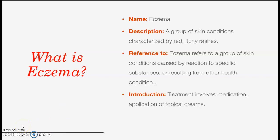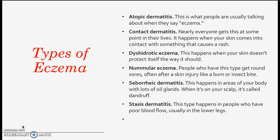What are the other types of eczema? Atopic dermatitis is what people are usually talking about when they say eczema. Contact dermatitis — nearly everyone gets this at some point in their lives. It happens when your skin comes into contact with something that causes a rash.